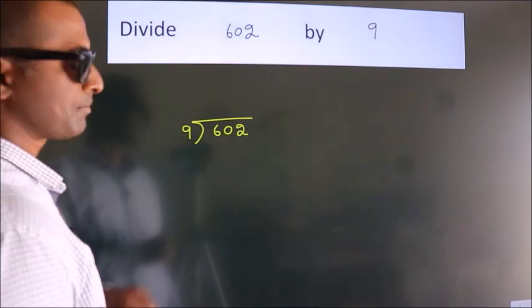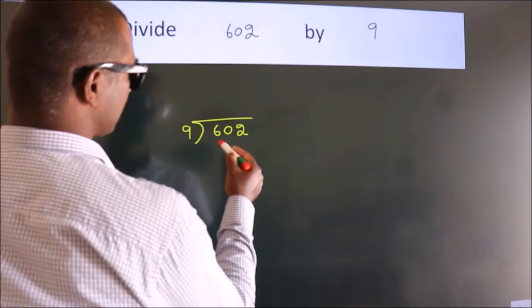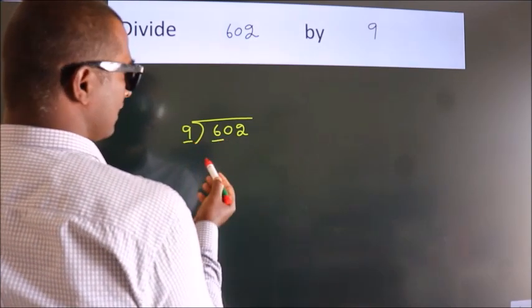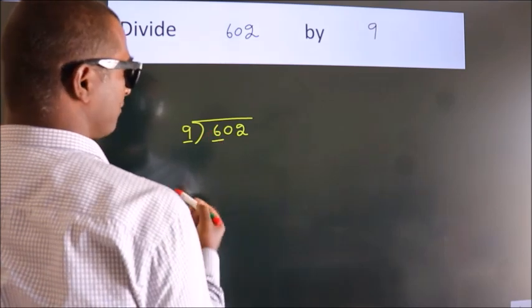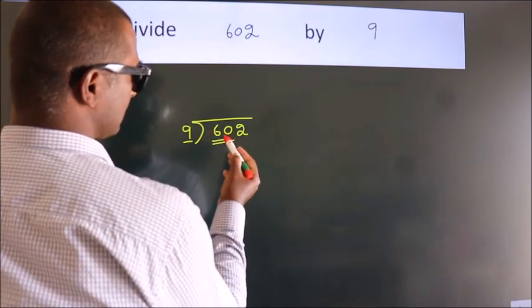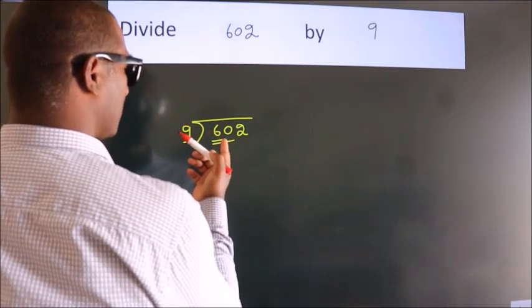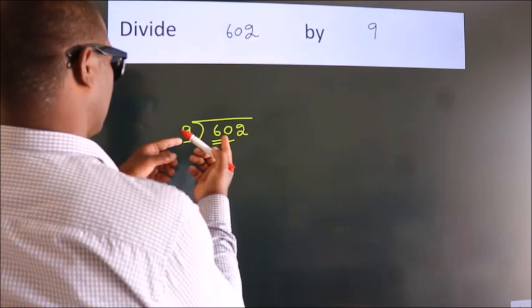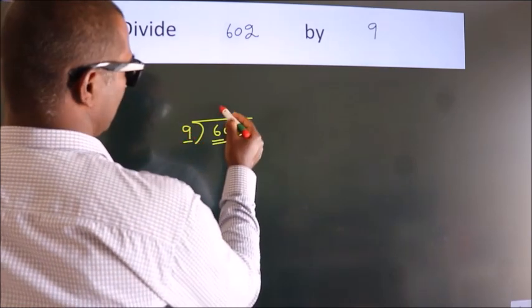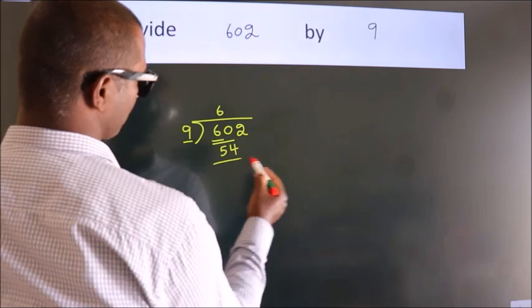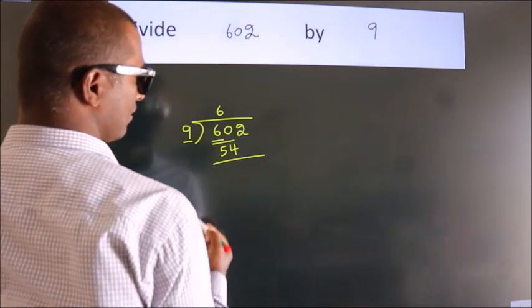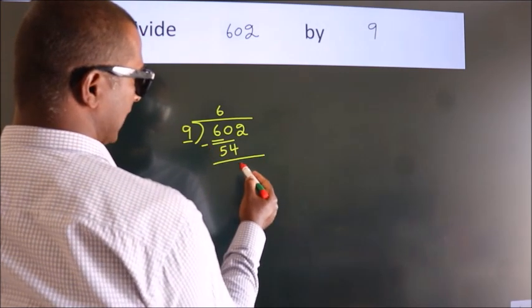Next. Here we have 6, here 9. 6 is smaller than 9, so we should take two numbers: 60. A number close to 60 in the 9 table is 9×6=54. Now we should subtract. We get 6.